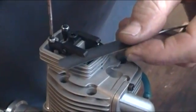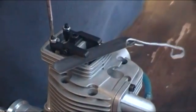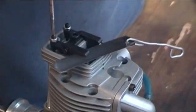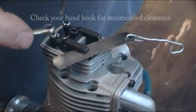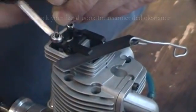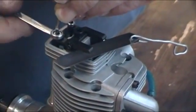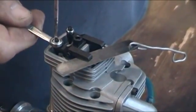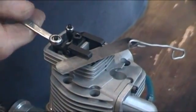We have got a 0.1mm or a fourth thou feeler gauge, using a small ring spanner and a screwdriver. If you have got an OS engine it will be a spanner and an allen key.